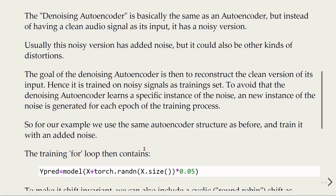The goal of the denoising autoencoder is to reconstruct the clean version of its input. Hence, it is trained on noisy signals as training sets. To avoid that the denoising autoencoder learns a specific instance of the noise, a new instance of the noise is generated for each epoch of the training process.